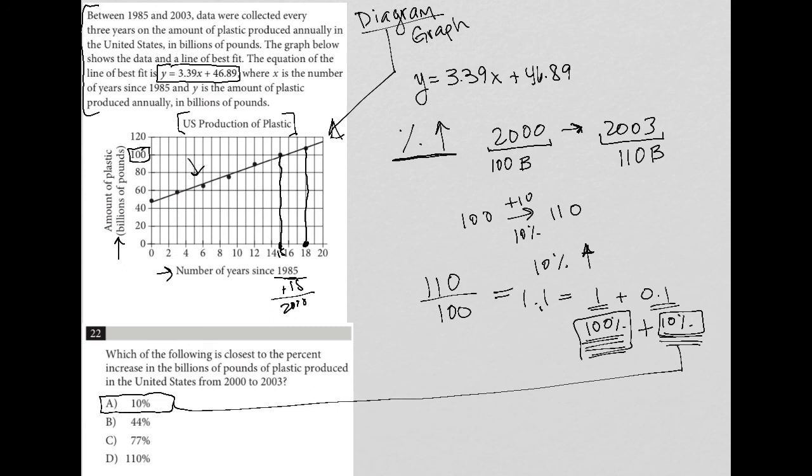The year 2003's number is 110% of, it's 10% higher than 2000. That's what we're looking for, the percent increase, not the overall percentage.